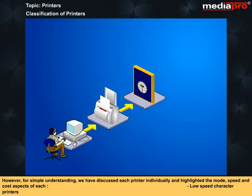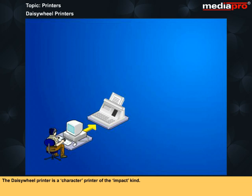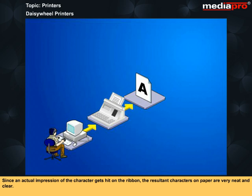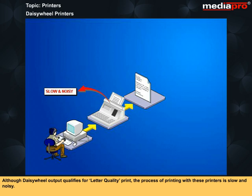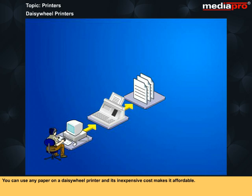For simple understanding, we have discussed each printer individually and highlighted the mode, speed, and cost aspects of each: low speed character printers, low speed page printers, high speed impact line printers, and high speed non-impact page printers. The daisy wheel printer is a character printer of the impact kind. The print head in this looks like a daisy, with petal-like spokes at each end of which is a character. Since an actual impression of the character gets hit on the ribbon, the resultant characters on paper are very neat and clear. Also, the daisy wheels are interchangeable, thereby allowing the user to use different font faces available on different daisy wheels. Although daisy wheel output qualifies for letter quality print, the process of printing with these printers is slow and noisy. They are usually found for low volume jobs in offices and homes where letter quality is necessary, but speed and noise is not a consideration. You can use any paper on the daisy wheel printer and its inexpensive cost makes it affordable.